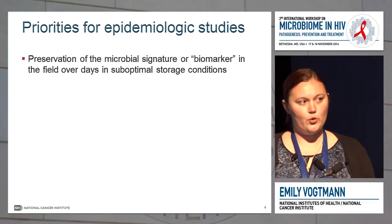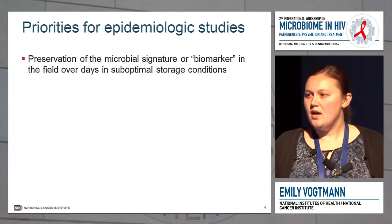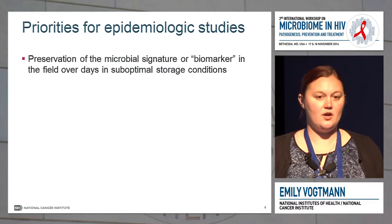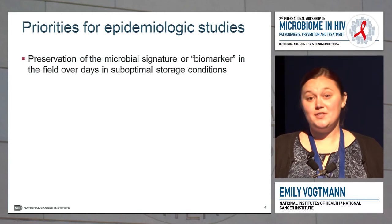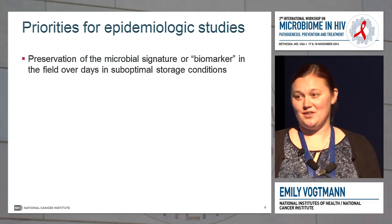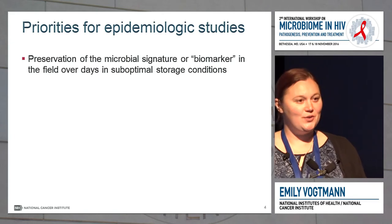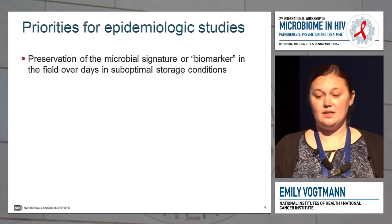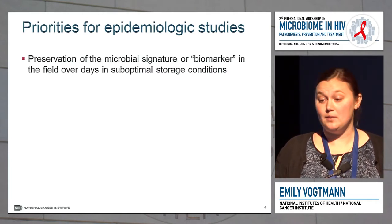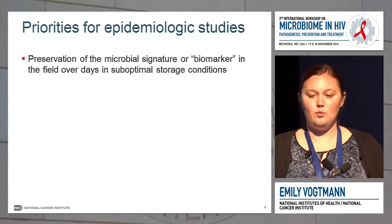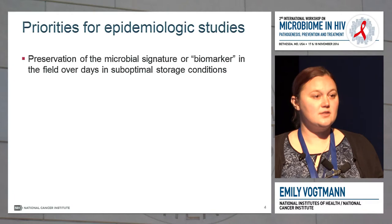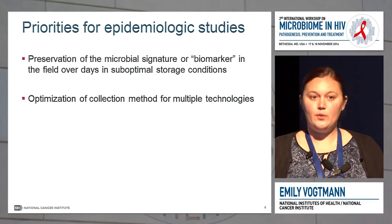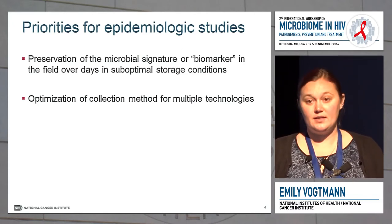Some of our priorities have been first to evaluate different collection methods. In a large epidemiological study, you might have 50,000 or 100,000 participants. For a fecal sample, it's really difficult to get someone to come to the clinic and have a bowel movement for you. So you need to find a method where the person can collect it at home, keep it at room temperature, and maybe send it in the mail. We want to find a method that will preserve the microbial signature in suboptimal storage conditions, and also evaluate methods optimized for different technologies like 16S, whole genome shotgun metagenomics, and metabolomics.